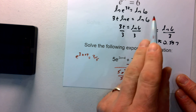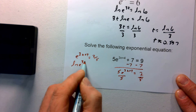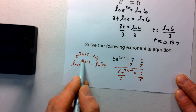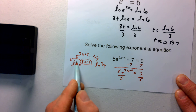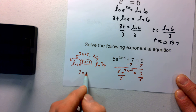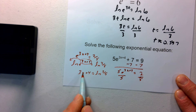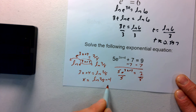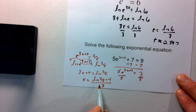Now it becomes a problem just like the first example. We take the natural log of both sides: the natural log of e to the 3x+4 equals the natural log of 2 fifths. The exponent 3x+4 comes to the front, and remembering that the natural log of e is 1, we get 3x+4 equals the natural log of 2 fifths. Solving for x by subtracting 4 and dividing by 3, x equals the natural log of 2 fifths minus 4, all divided by 3. That's our exact value.